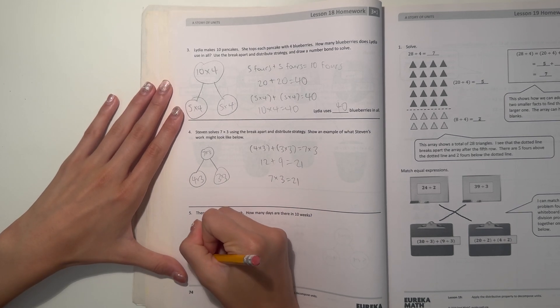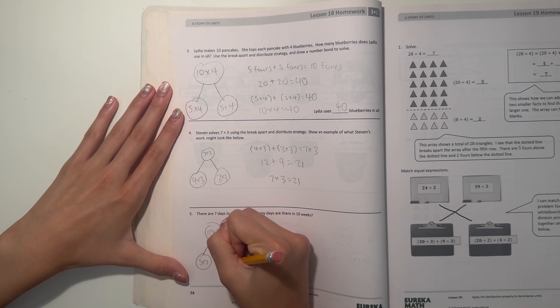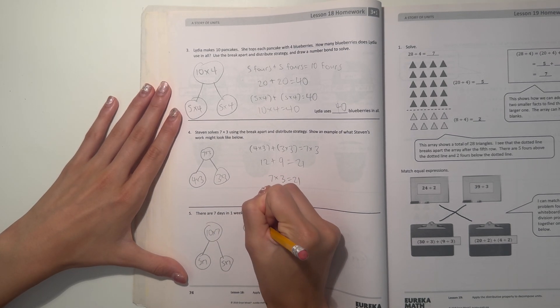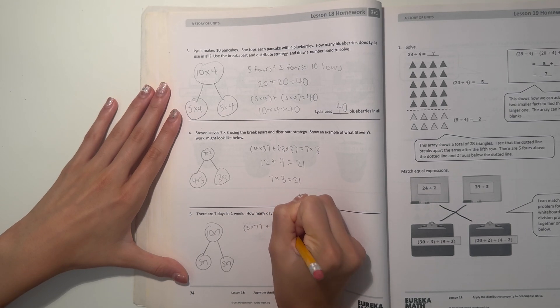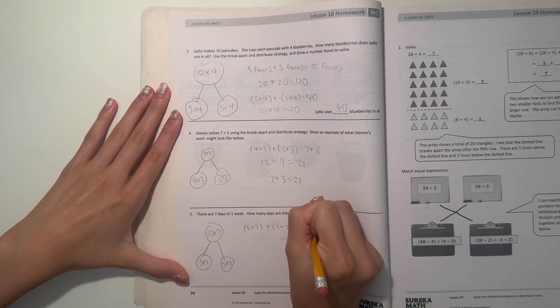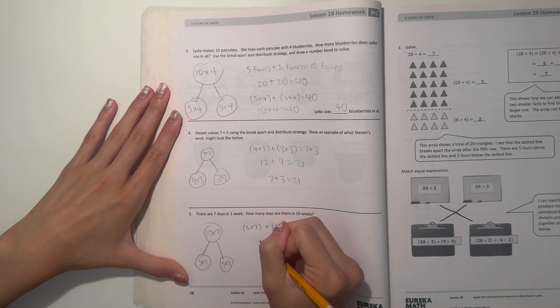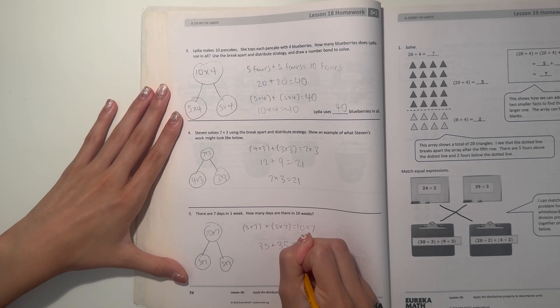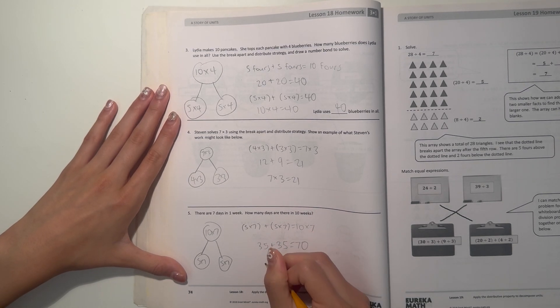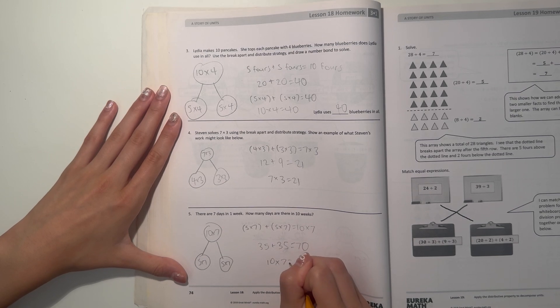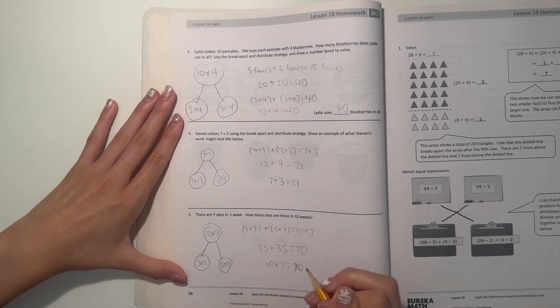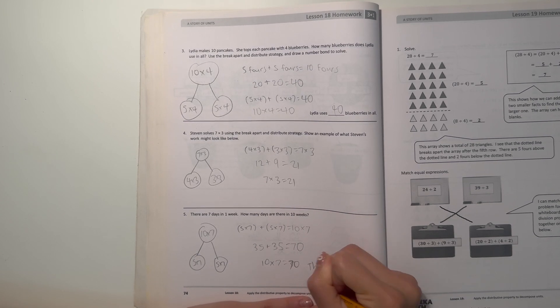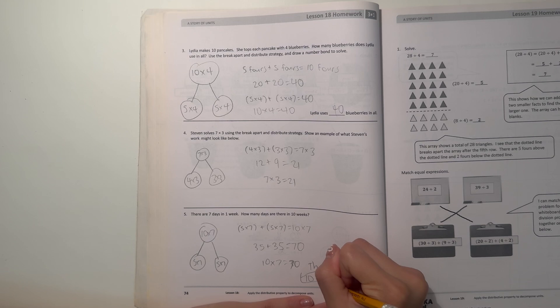I can do five times seven plus five times seven. So let's see, five times seven plus five times seven equals ten times seven. So five times seven is 35, plus five times seven again is 35. 35 plus 35 is 70, which means 10 times seven equals 70. So the answer: there are 70 days